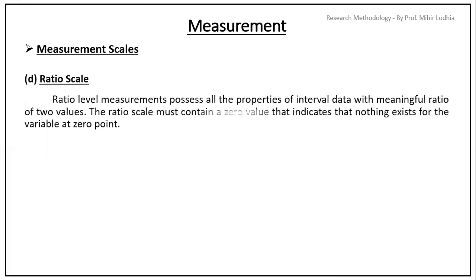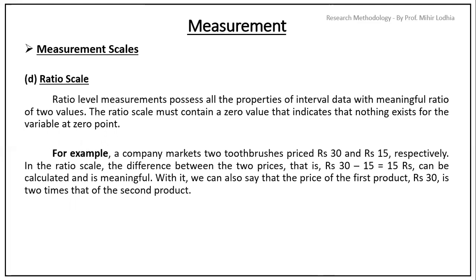Last one is the ratio scale. The ratio level measurement possesses all the properties of interval data with meaningful ratio of two values. The ratio scale must contain a zero value that indicates that nothing exists for the variable at zero point. For example, a company markets two toothbrushes priced at Rs 30 and 15 respectively. In the ratio scale, the difference between the two prices, Rs 30 minus 15 equals Rs 15, can be calculated and is meaningful. With it, we can also say that the price of the first product Rs 30 is two times that of the second product.